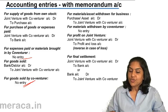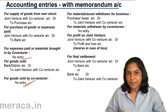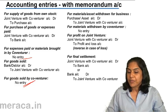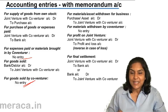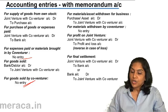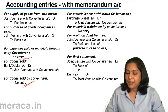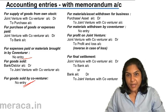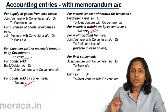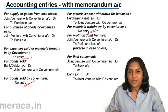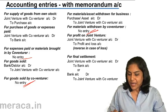If materials or an asset are withdrawn from the business by Akash, the entry is purchases account debit, or asset account debit, to joint venture with co-venturer account. If materials are withdrawn by Bikash, there is no entry in the books of Akash — no entry in Akash's books for any transaction made by Bikash.